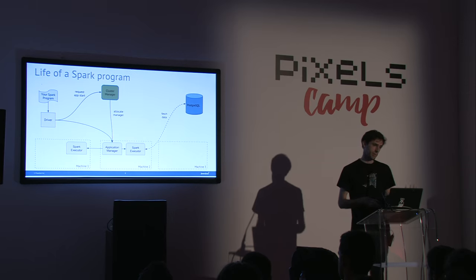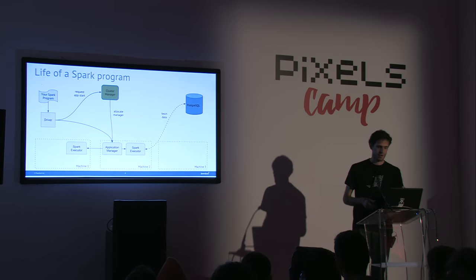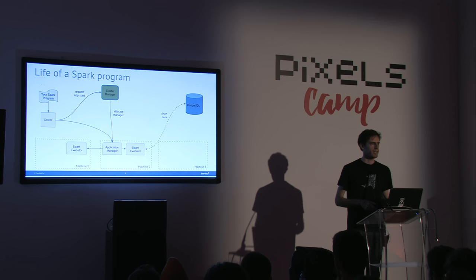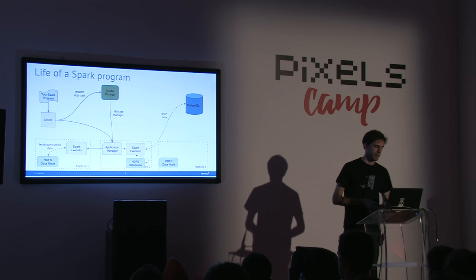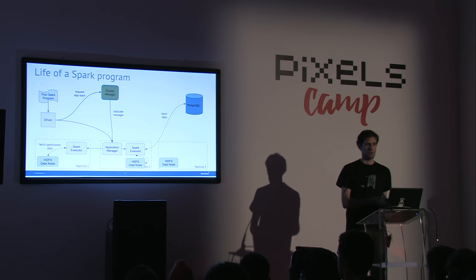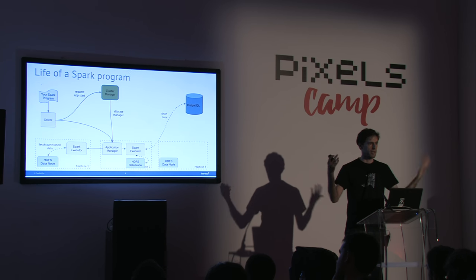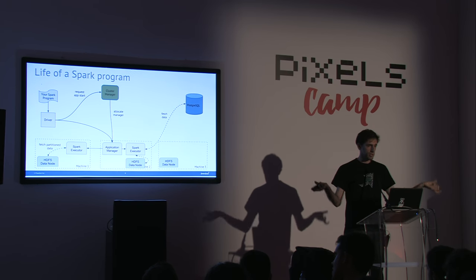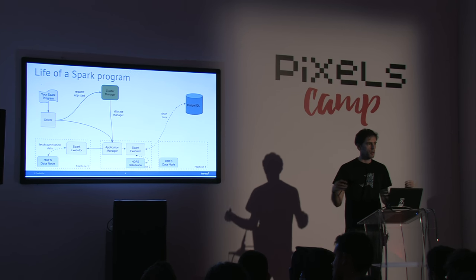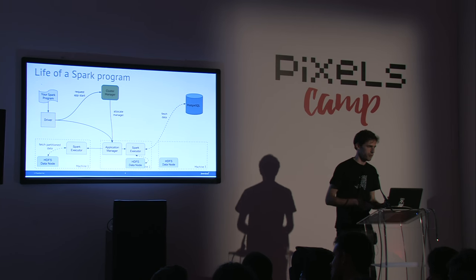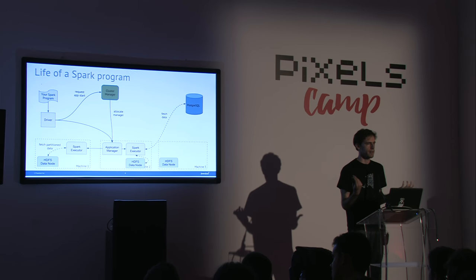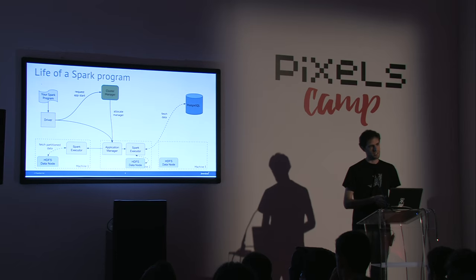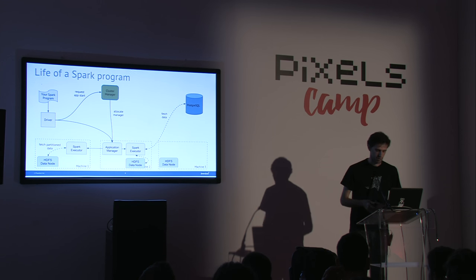Each Spark task inside an executor fetches data. You can fetch it from Postgres on a single machine, but if you really have a huge data set it's most likely distributed and replicated — for instance on HDFS. A typical deployment has Spark and data co-located so that each Spark executor processes the portion of data co-located with it, avoiding data transfer over the network. You only transfer the really aggregated, meaningful data at the end. In a distributed system, the network is your worst enemy.